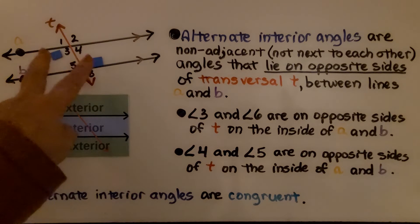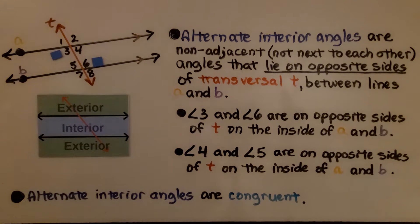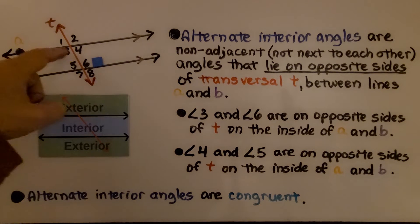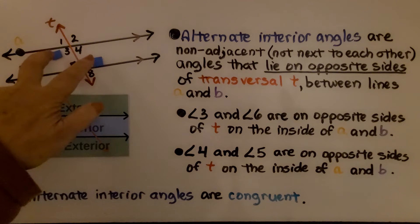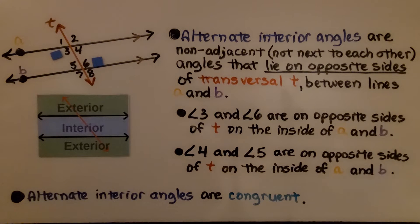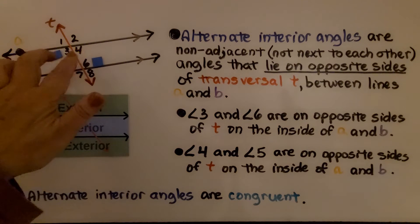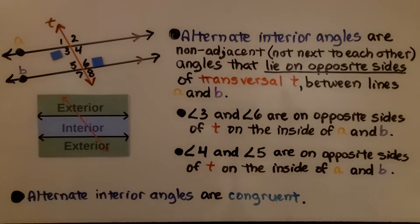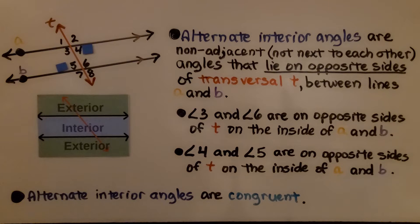Now take a look at alternate interior angles. They're non-adjacent angles — meaning they're not next to each other. Angles 3 and 6 are non-adjacent and lie on opposite sides of transversal T between lines A and B, so they're on the interior. Angle 4 and angle 5 are also on opposite sides of the transversal on the inside of A and B — they're also alternate interior angles. Alternate interior angles are congruent; they have the same angle measure.